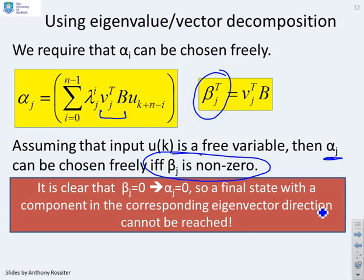If beta j is 0, then clearly alpha j is 0. Therefore a final state with a component in the corresponding eigenvector direction cannot be reached. You will notice this is the same insight and conclusion that we got for continuous time systems in video 2.